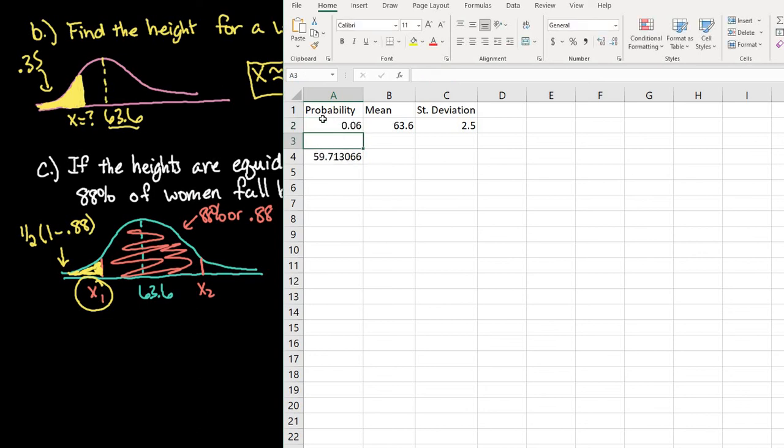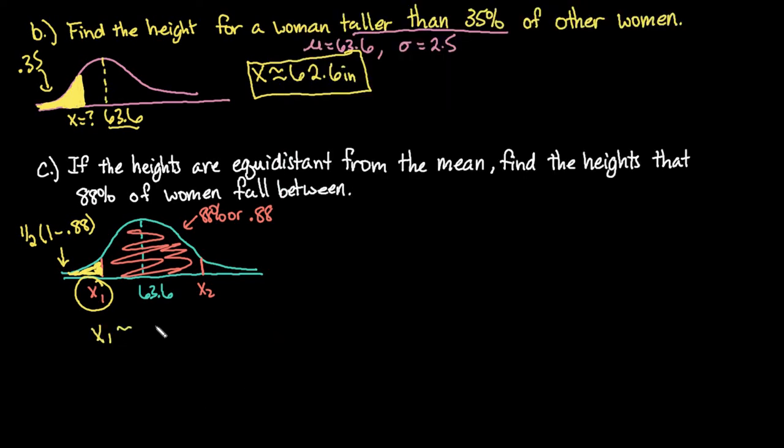You can always plug in the formula. So 59.7 inches would be our x1 value. So our value to the lower side would be 59.7 inches.